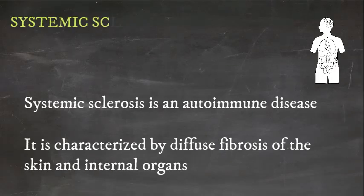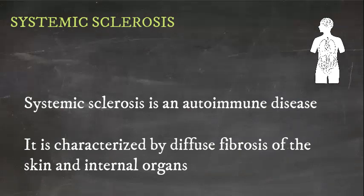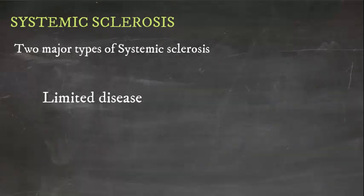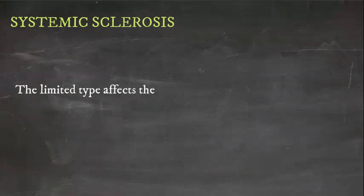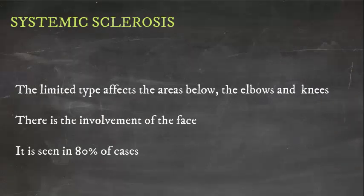Systemic sclerosis is an autoimmune disease characterized by diffuse fibrosis of the skin and internal organs. There are two major types based on the extent of skin involvement: limited disease and diffuse type. The limited type affects areas below the elbows and knees and involves the face, seen in 80% of cases, while the diffuse form also affects the skin above the elbows and knees.